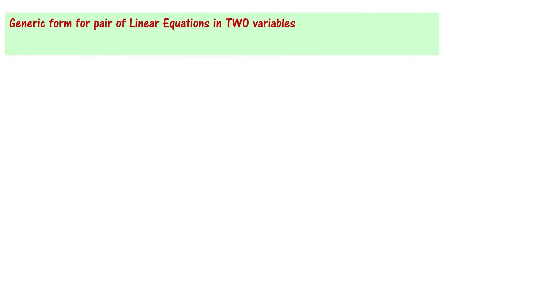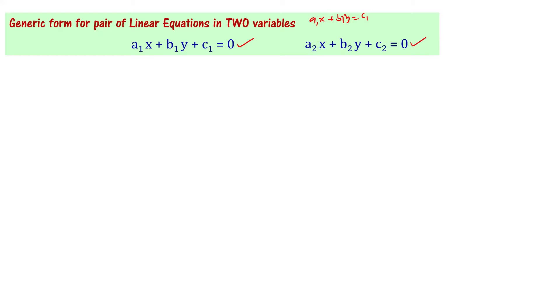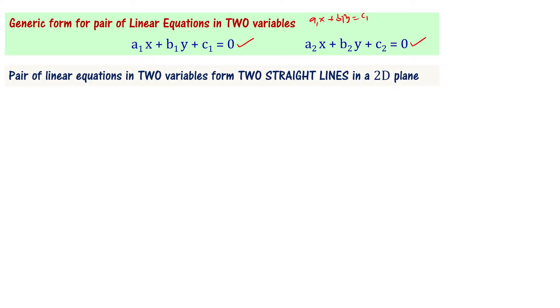This video is about the relation between coefficients of a pair of linear equations and the nature of their solutions. The generic form for a pair of linear equations in two variables is: a1x + b1y + c1 = 0 and a2x + b2y + c2 = 0. We will show the pair of linear equations as two straight lines in a 2D plane.